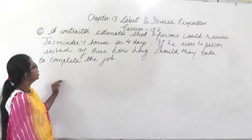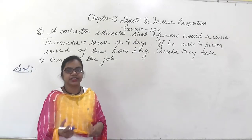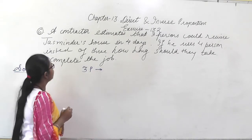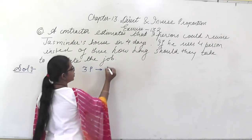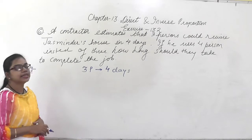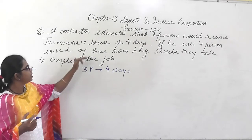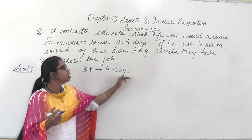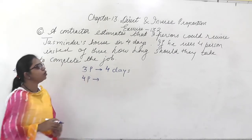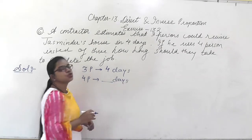In question 6, it says a contractor estimates that 3 persons could revive a widow's house in 4 days. Means a contractor has made an estimation that 3 persons will complete this job in 4 days. If he uses 4 persons instead of 3, you have to find out how long they should take to complete the job — that is, you have to find out the number of days.